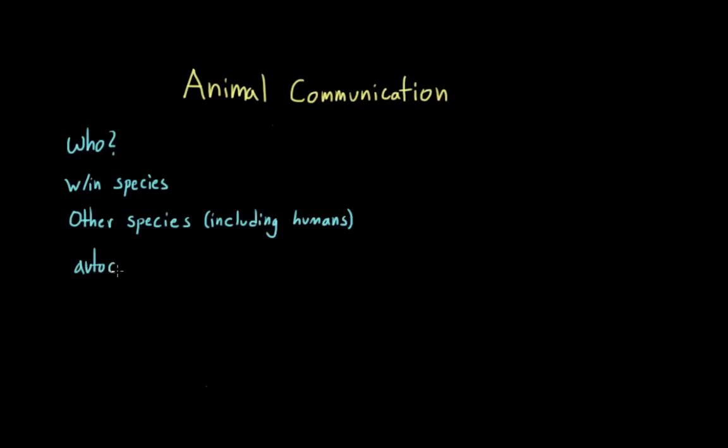But there's also auto-communication. So animals can also use communication to give information to themselves. And that's kind of a trickier one, but I think the best example might be bats and echolocation. So bats send out a signal, and then when that signal bounces back, they're able to gain information about the things in their environment.